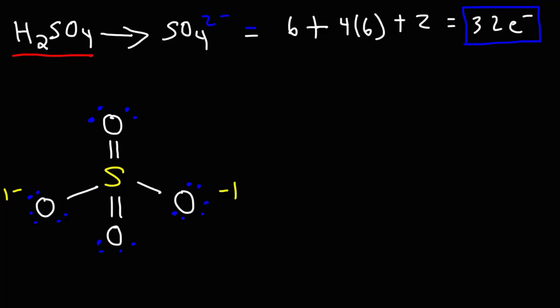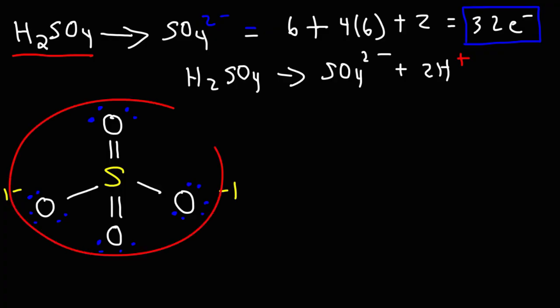You could think of sulfuric acid as being one sulfate ion combined with two hydrogen ions. So what we're going to do in order to make sulfuric acid is we're going to add two hydrogen ions to that structure. If we put two hydrogen ions next to sulfate, how will they interact?